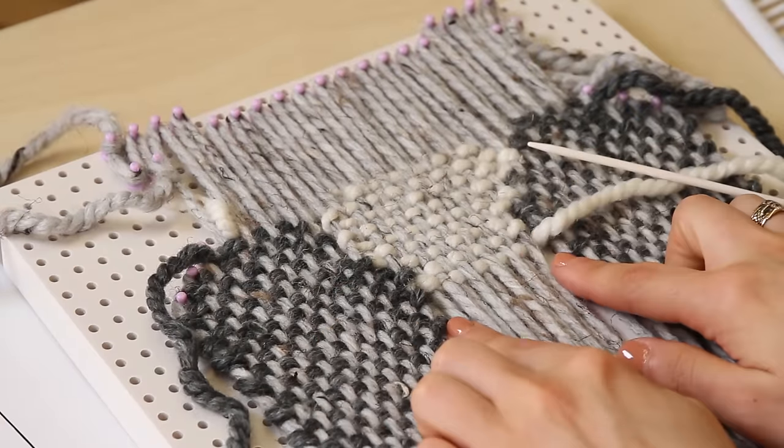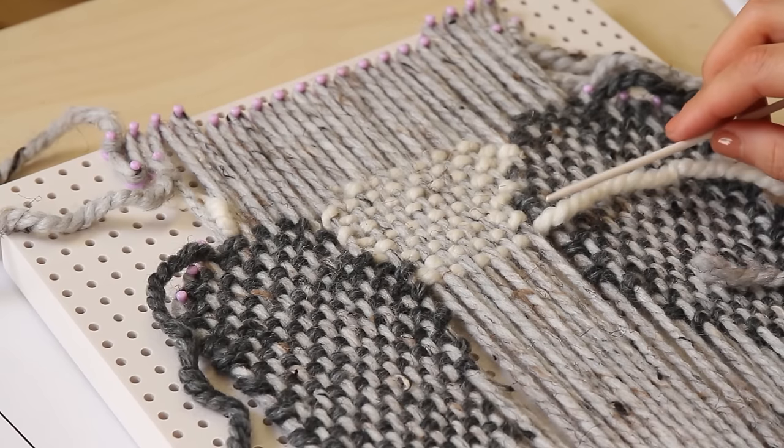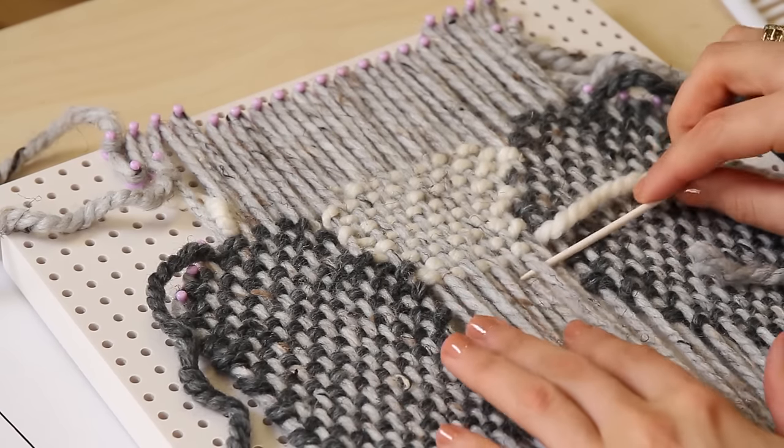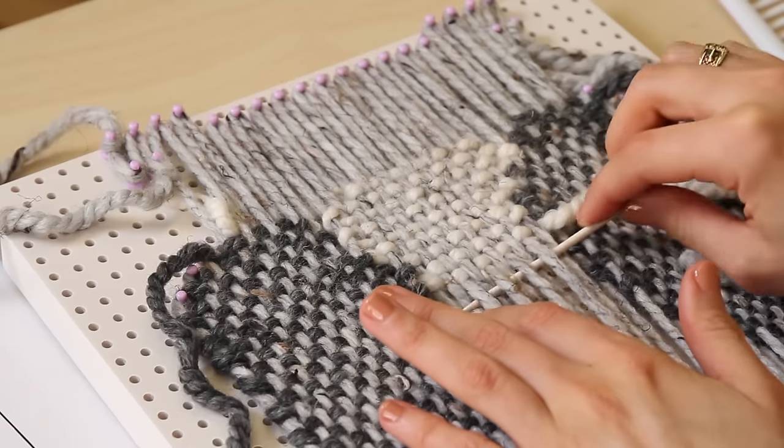I've worked both wings and I'm now continuing on in the center belly with Woolies Thick and Quick in Fisherman. You can see that there are slits forming in the fabric between the wings and the center belly.